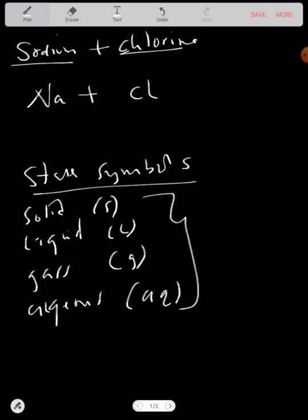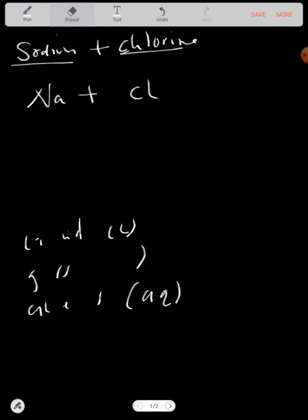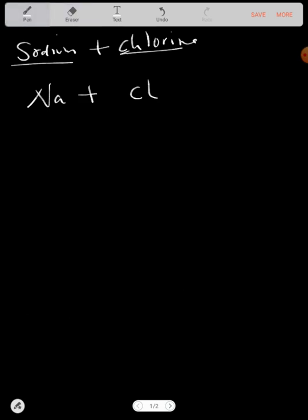Let's go back to our formulation. Sodium is a solid because sodium is a metal, and chlorine is a gas. Chlorine is a diatomic molecule so it has to have a subscript 2: Cl₂(g).